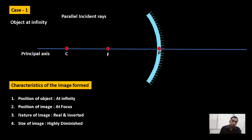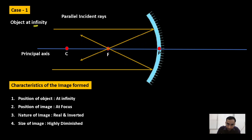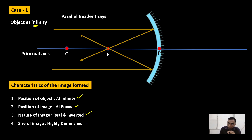The first case is when the object is at infinity. The rays coming from the object are parallel to one another as well as parallel to the principal axis. After reflection, the reflected rays pass through the focus — they meet at focus. When reflected rays meet, the image is always real and inverted. The image is formed at focus, and the size is highly diminished. Use the word 'highly' only when the object or image is at infinity.